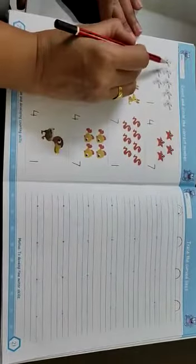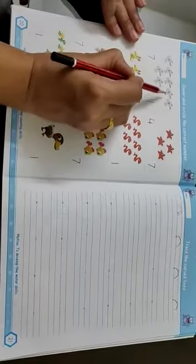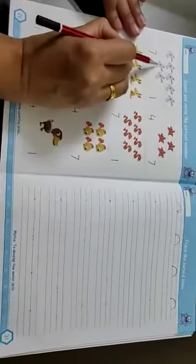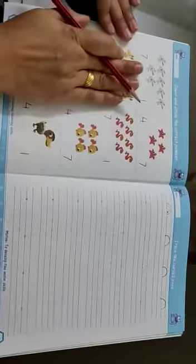Let the child count 1, 2, 3, 4, 5, 6, 7. Let the child do it himself or herself.